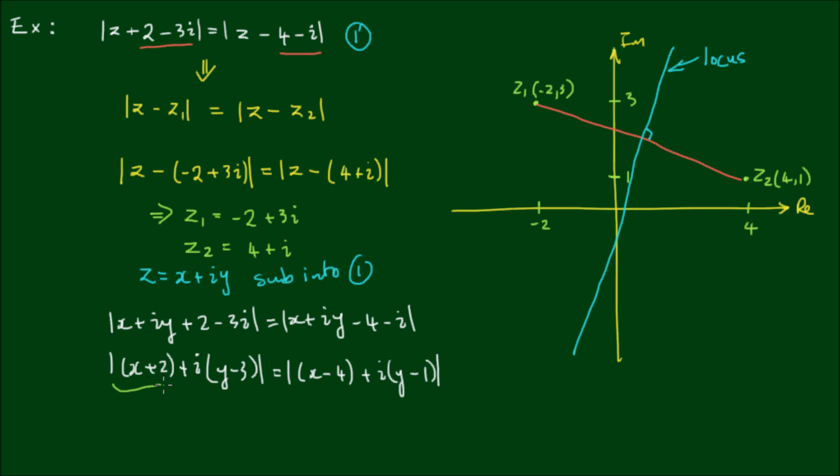So the modulus of this can be written as the square root of the real part squared plus the imaginary part squared. So this can be expressed as √[(x + 2)² + (y - 3)²] = √[(x - 4)² + (y - 1)²].